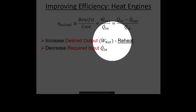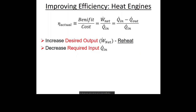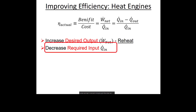When looking at thermal efficiency as net power over heat rate in, I think of reheat as increasing the net power by adding a second turbine. Regeneration, which we're about to learn, is about decreasing the required heat rate in.